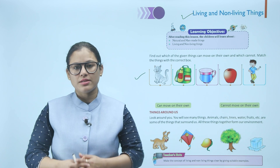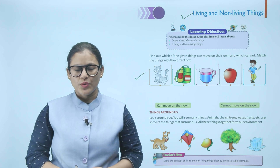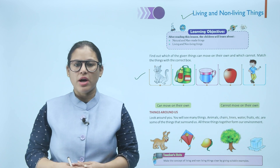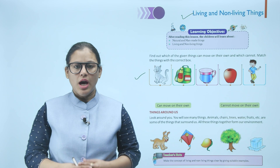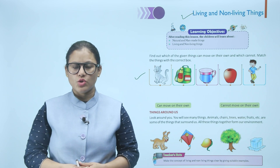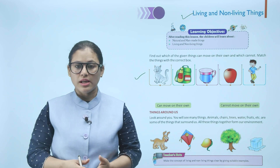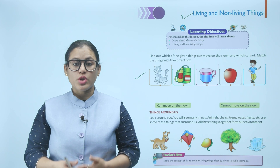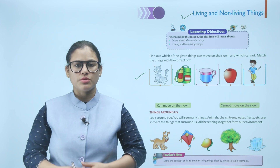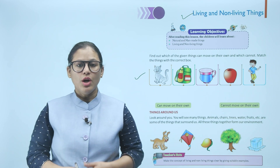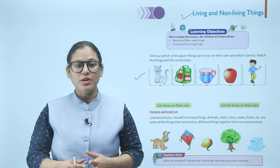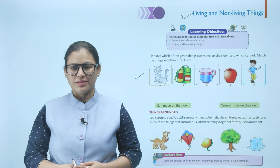Some of the things that surround us all form our environment. Agar hum apne aaspaas dekhein to hume bohat saari cheezein dikhti hain, jaise ki animals, chairs, trees, birds, etc. To yeh saari cheezein milke hamara environment banati hain.